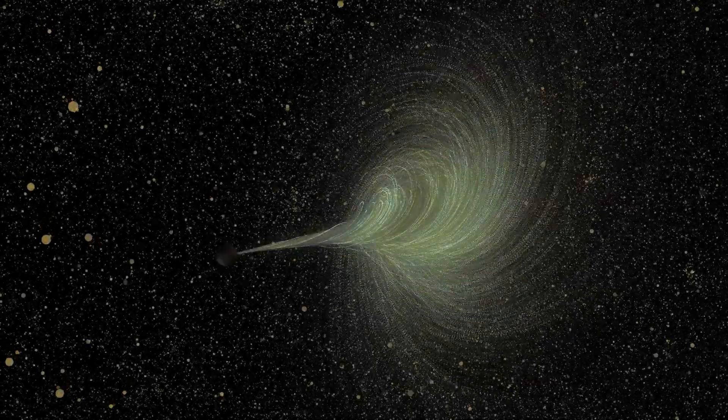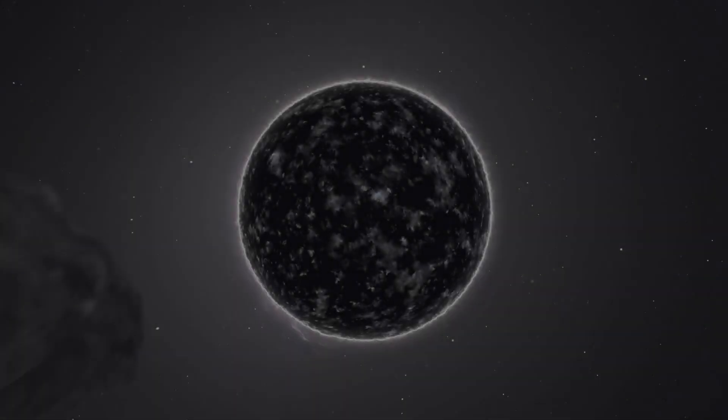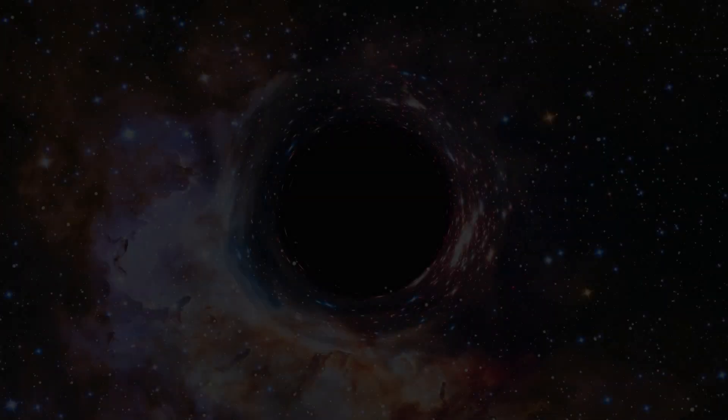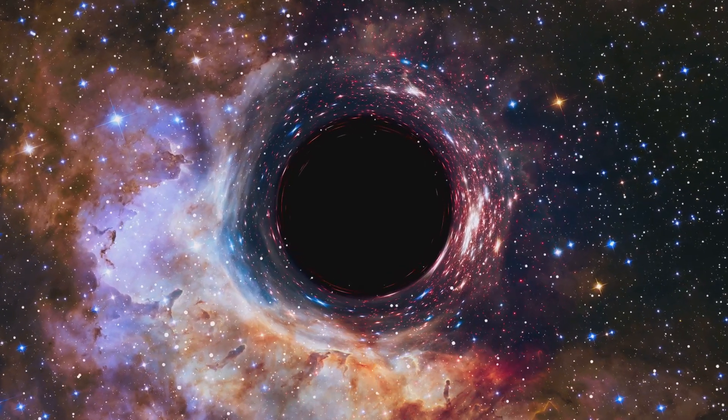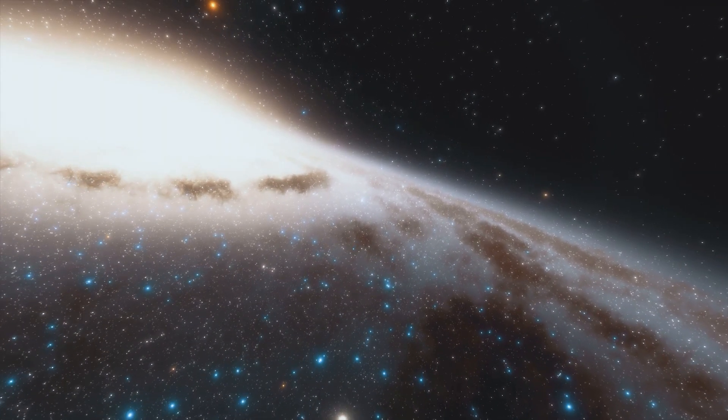But how do we find them? Smaller primordial black holes might have evaporated over time due to Hawking radiation, which is a process where black holes lose mass. This means that many of the smallest primordial black holes might have already disappeared. However, larger primordial black holes could still be out there, hidden in the vastness of space, still waiting to be discovered.